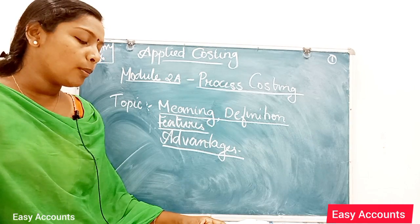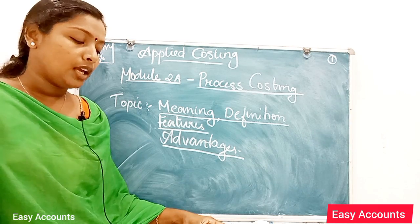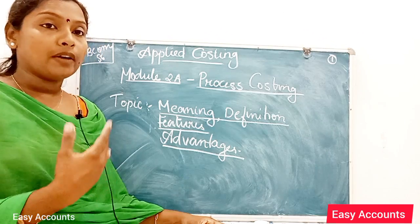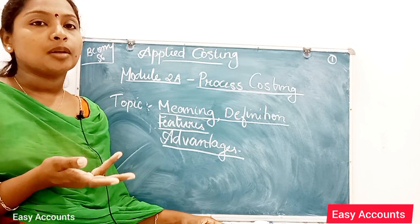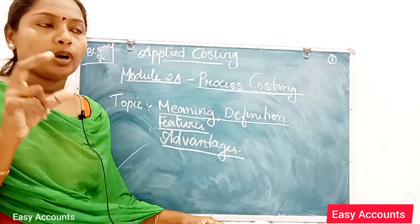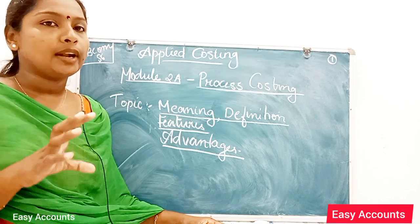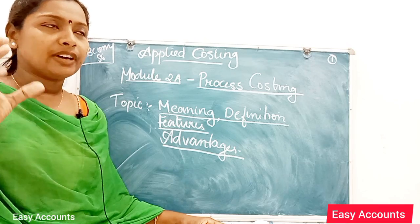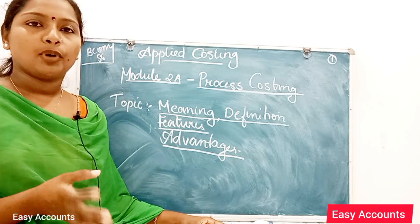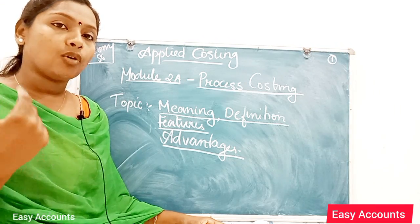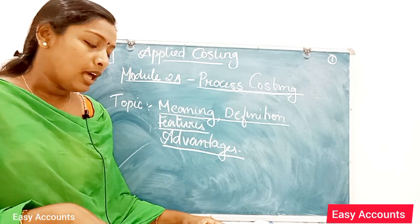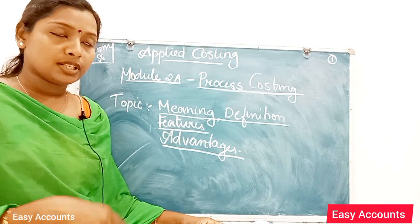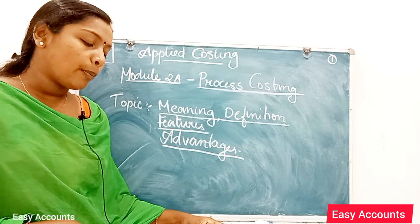The next feature is the arising of normal or abnormal loss or gain. There is a natural normal loss. If you cannot avoid any loss, the loss of product and raw materials must be properly recorded.